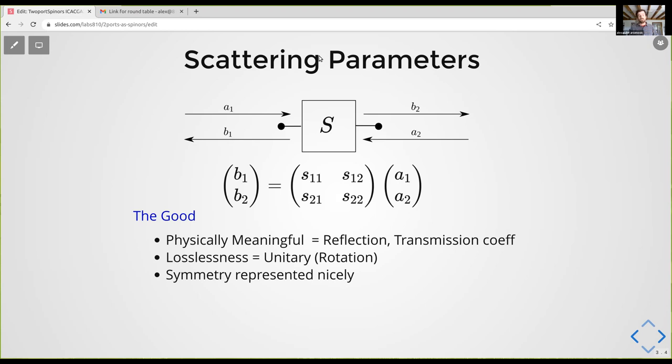The other thing that's good is that a lossless network is represented as a unitary matrix. So that's nice. Symmetry is also represented nicely with matrix operations. The bad thing, and this is important, is that the matrix product is not useful. And that's a big problem.